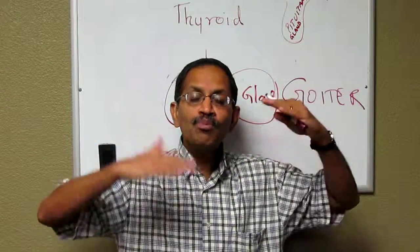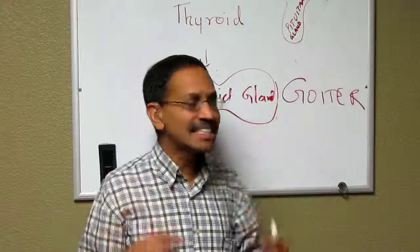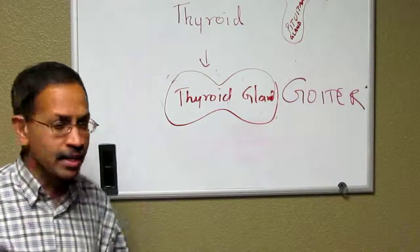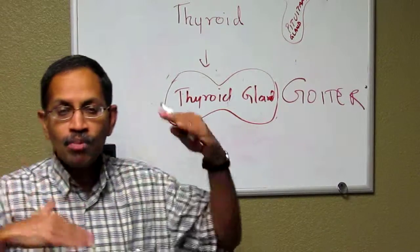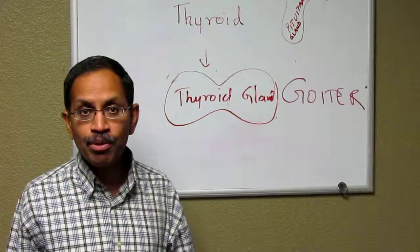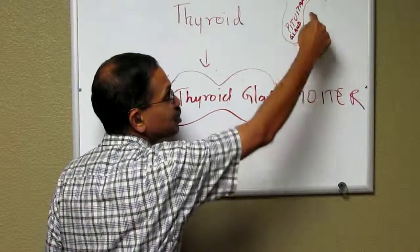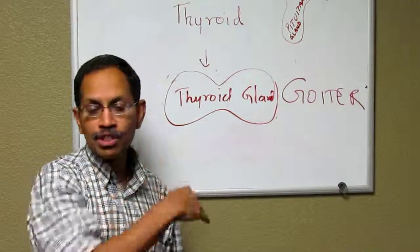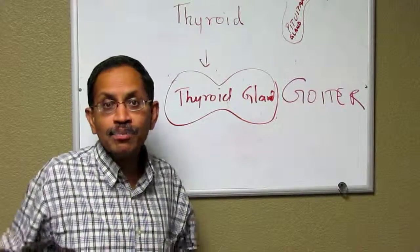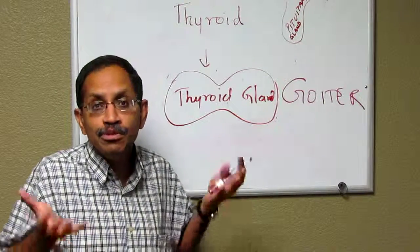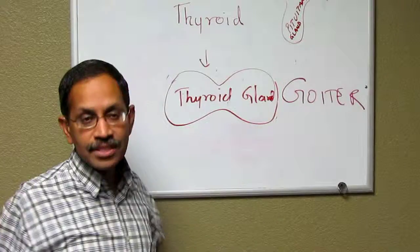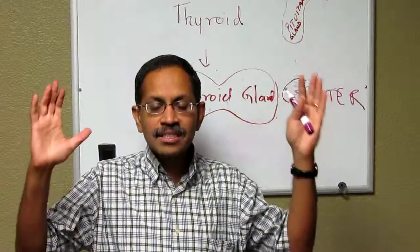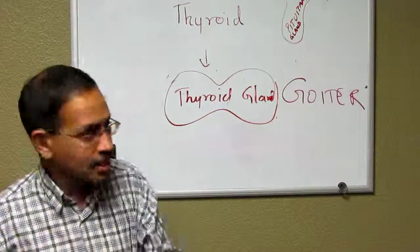Sometimes there are hormonal dysgenesis, where inside the pathway of the thyroid gland, the thyroid hormone is not produced well. So the signals from the pituitary gland keep sending more signals to the thyroid gland, asking it to produce more, and that can enlarge the thyroid gland. So that's what goiter means.